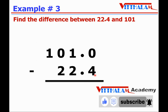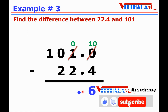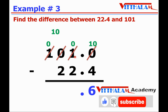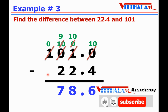0 is smaller than 4, so it will borrow from the next digit: 1 becomes 0 and this 0 becomes 10. 10 minus 4 is 6. Put the decimal point. 0 is smaller than 2, it borrows from 0, but 0 can't give anything, so it borrows from 1 — 1 becomes 0, that 0 becomes 10, but it must give to the next digit, so it becomes 9 and this 0 becomes 10. 10 minus 2 is 8, 9 minus 2 is 7. So the required difference is 78.6.